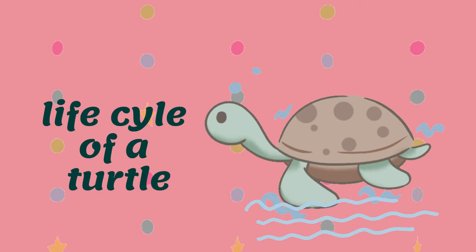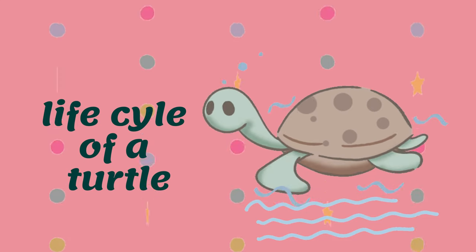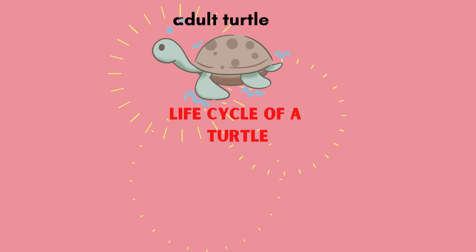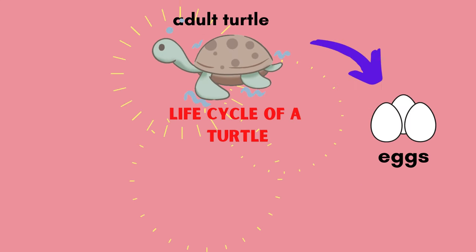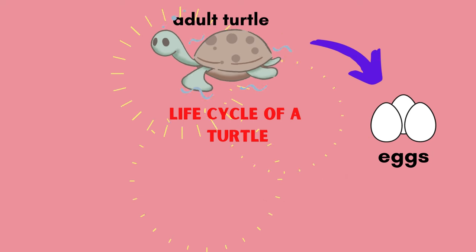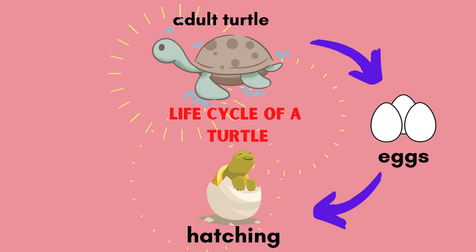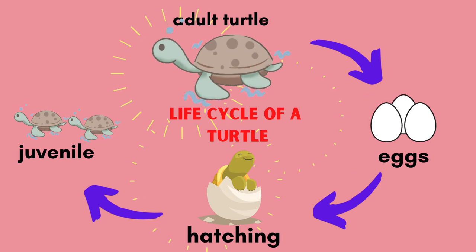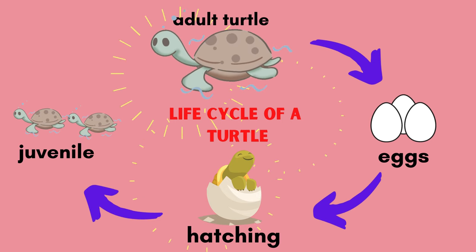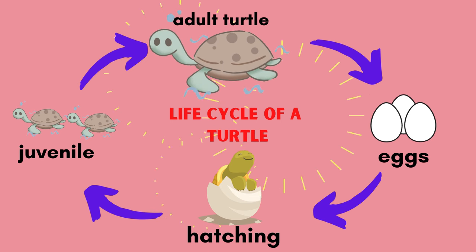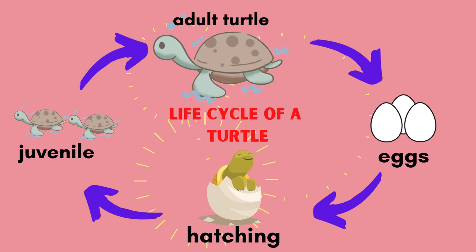Life cycle of a turtle. An adult turtle will lay eggs, and the eggs will hatch. Then little turtles will come out, and later on they will grow into an adult turtle.